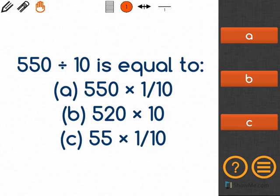The math problem says 550 divided by 10 is equal to: A, 550 times 1 tenth; B, 520 times 10; or C, 55 times 1 tenth.